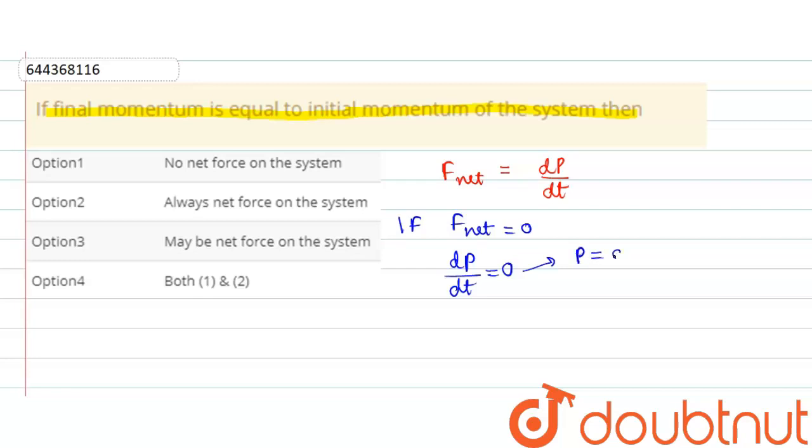momentum comes out to be equals to constant, that is initial momentum m1v1 is equals to final momentum m2v2. So we can say that the final momentum is equals to initial momentum of the system.